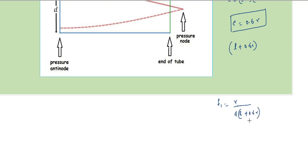the length is modified. Length becomes l plus 0.6 into r; this is called as end correction.